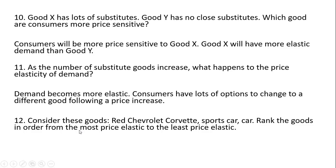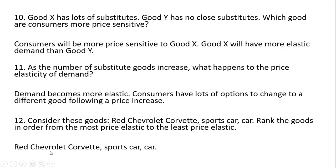Question 12: Consider three goods — a red Chevrolet Corvette, a sports car, and a car. Rank them from most to least price elastic. The most price elastic would be the red Chevrolet Corvette: there are lots of substitutes, like blue or yellow Corvettes. Next most elastic is the sports car — not quite as many substitutes as for a specific red Corvette. Least elastic is a car, since there are fewer substitutes for a car than for sports cars or red Corvettes.